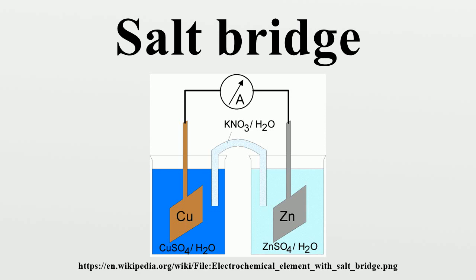The salt bridge can be seen as a way of completing the ionic circuit without letting the solutions intermix. A salt bridge connects the two solutions of half cells. Therefore, it completes the circuit and maintains the electrical neutrality of the two half cell solutions.